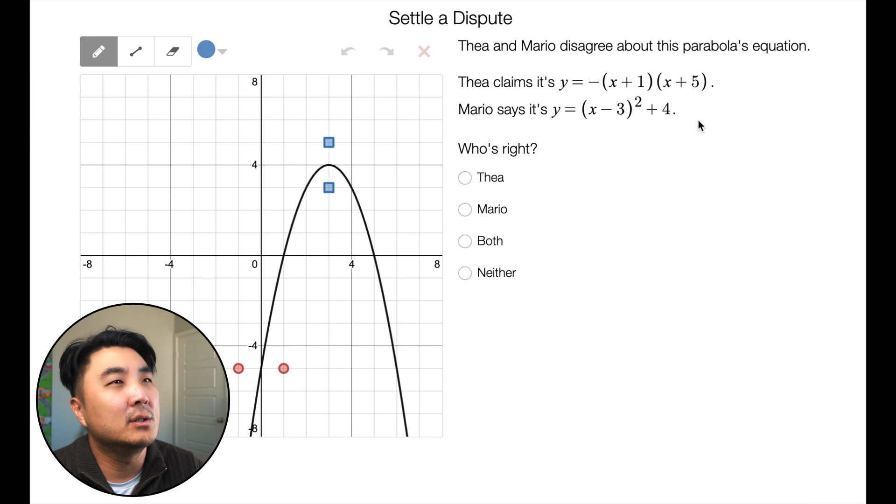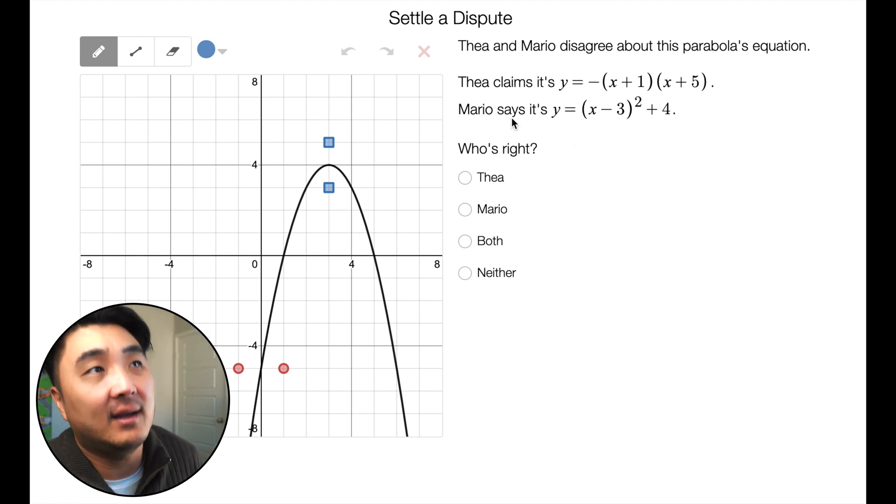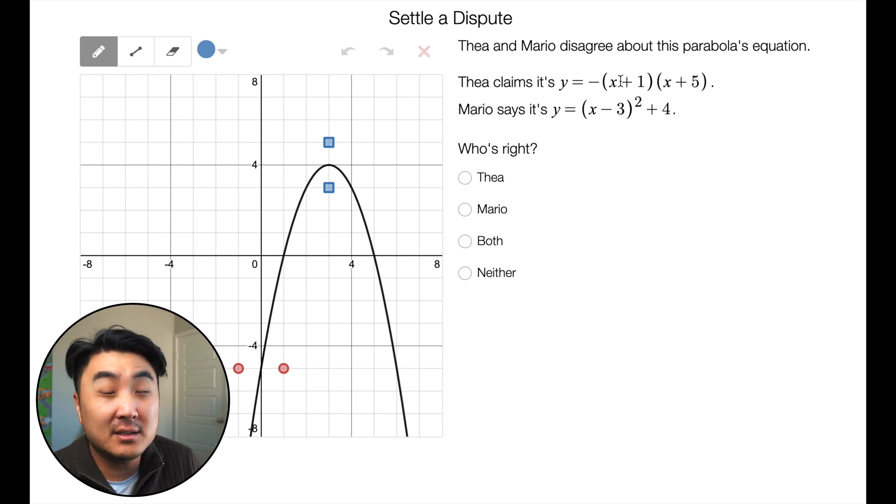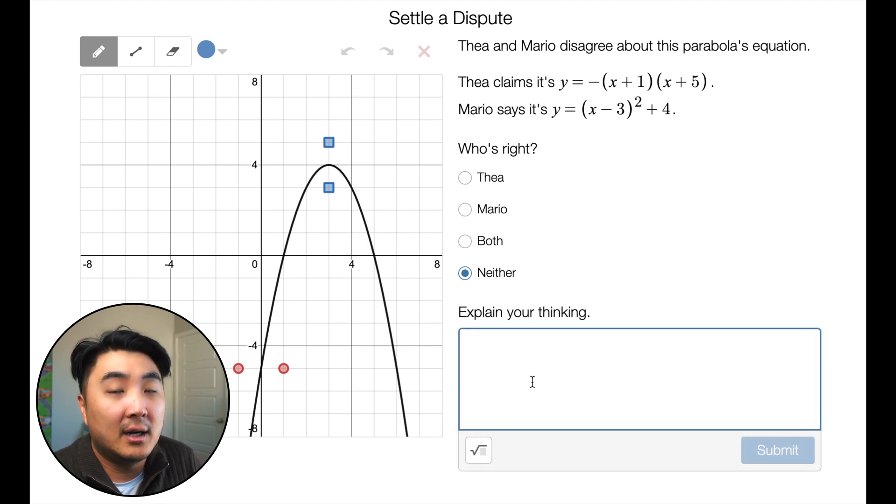Settle the dispute. Thea and Mario disagree about this parabola's equation. Thea claims y equals negative... Okay, so first of all, that should give you a big clue: negative or positive a values. Negative values - which way does it open? It opens downwards. The other one, if it's positive, it opens upwards. Which way does this open? It opens downwards, like for sure it opens downwards. So Mario is definitely wrong. So we have to think, is Thea correct? Well, let's take a look at her x-intercepts, because it says x plus one, x plus five. Her x-intercepts are actually going to be on the other side. So if you jumped the gun and you clicked on Thea and you wrote an explanation, rewind a little bit. It's definitely not going to be Mario, it's definitely not going to be both, it's definitely not going to be Thea given what I just said. It's going to be neither. Explain your thinking, so write in your own words what I just explained.